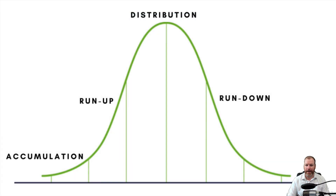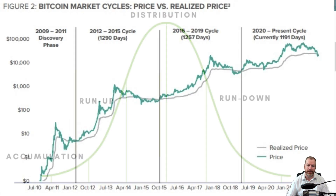So how do you identify these market cycles at their different phases? First of all, it's essential to understand the broader economic and geopolitical factors that can influence the cryptocurrency market. For example, regulatory changes, technological advancements, and global economic events can all impact the direction of all markets.